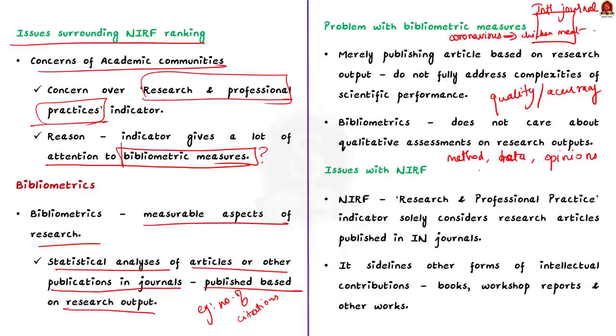Just by looking at the publication itself, we cannot fully evaluate the quality or accuracy of the research. We need to consider other factors like the methodology that is used, the credibility of the data, and the opinions of other experts in the field. But bibliometrics focuses mainly on the number of publications and citations. This doesn't take these qualitative measures into account. It is like only looking at the quantity of the papers without considering the quality. This is the major problem with the bibliometric measures.